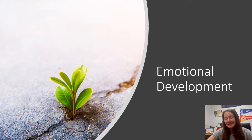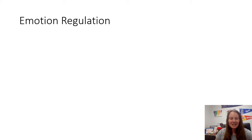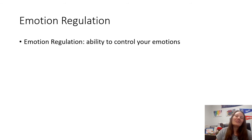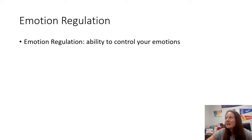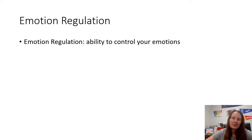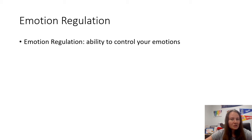Now that we've made it through information processing theory, we're moving on to emotional development in middle childhood. The book spends a lot of time on emotion regulation — basically the ability to control your emotions. Belsky actually changed her definition of industry versus inferiority between editions — previously she framed it as controlling your emotions to be industrious. Have you ever had a time where your emotions really impacted your ability to get things done? Discuss that in our Perusall site.